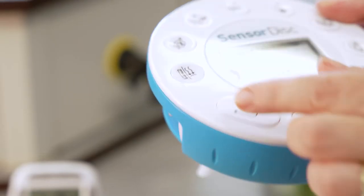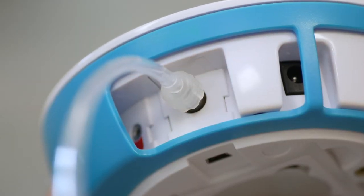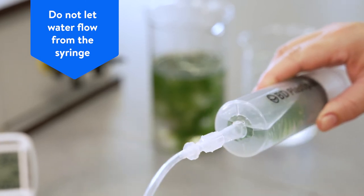Connect the air pressure tube between the syringe and the sensor disk. Do take care though not to let any water flow from the syringe through the tube into the sensor disk.